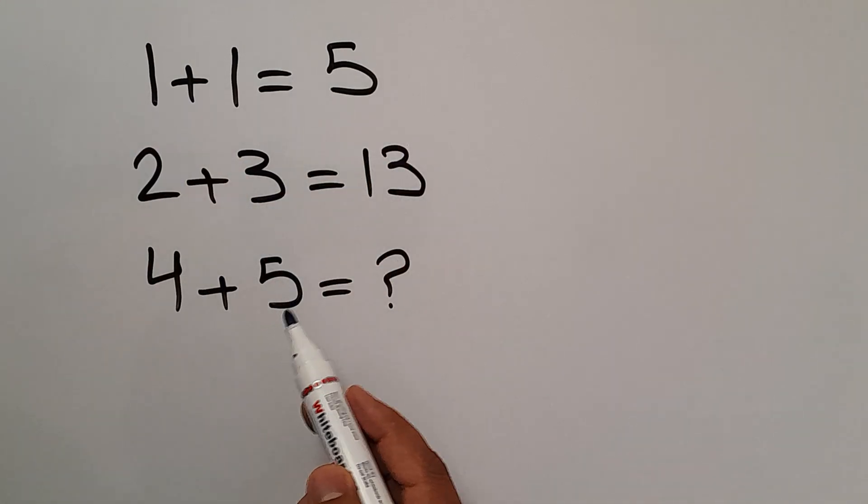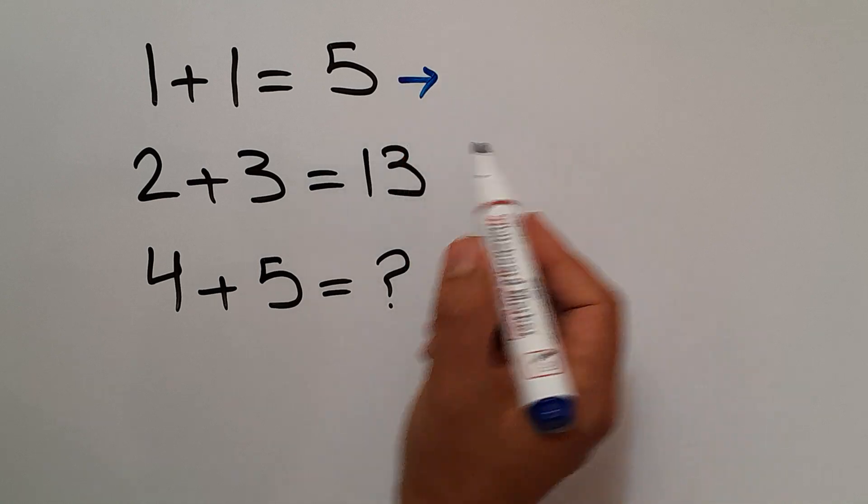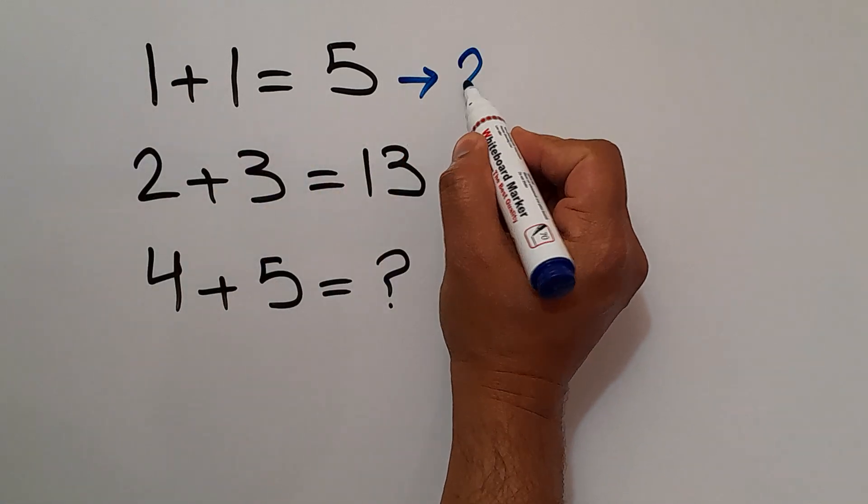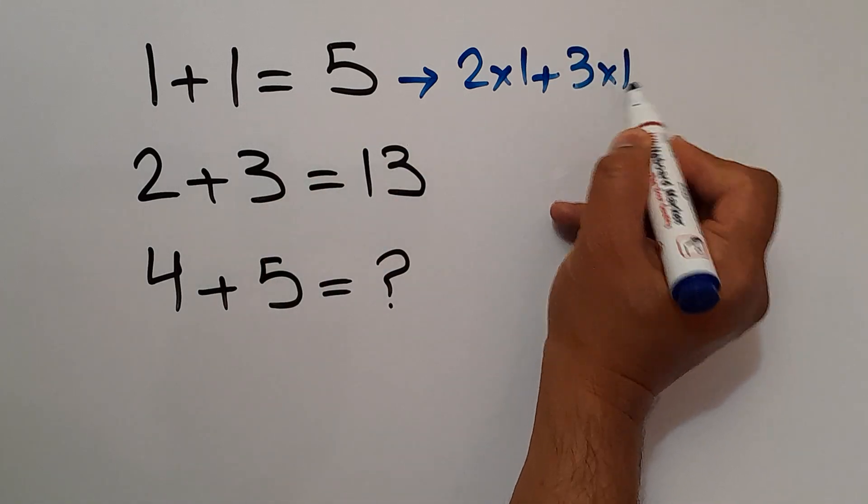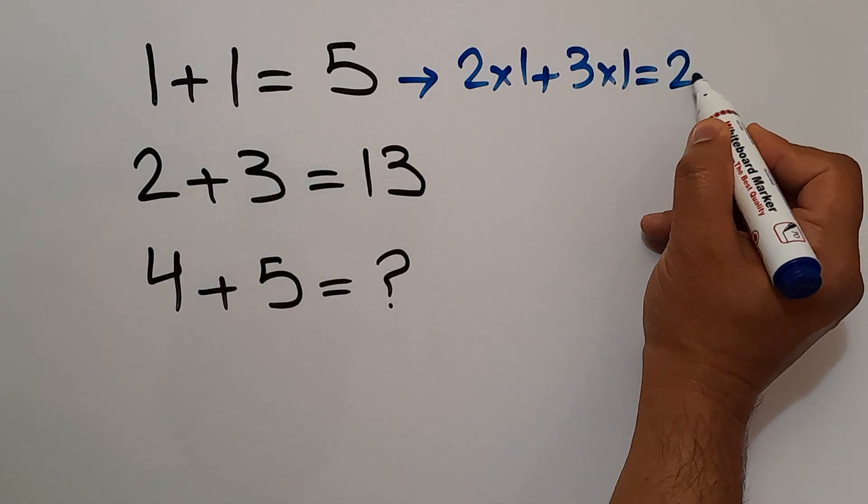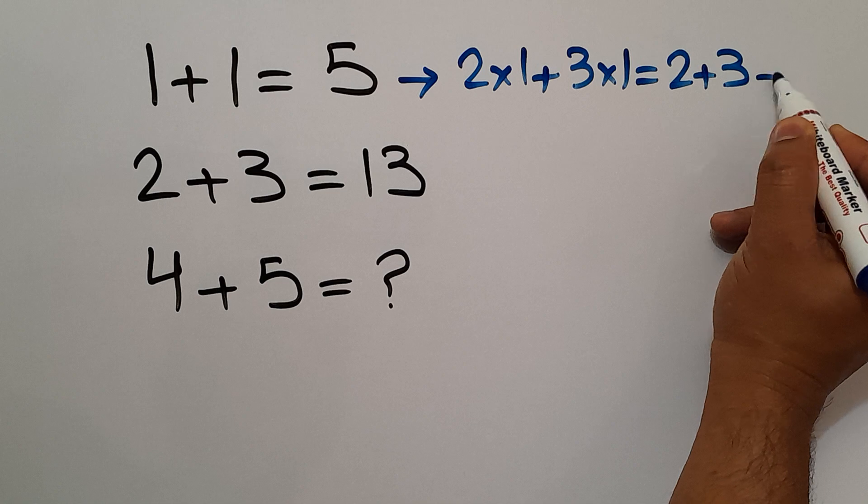Okay, 2 times 1 plus 3 times 1 equals 2 plus 3, which equals 5, the right hand side number.